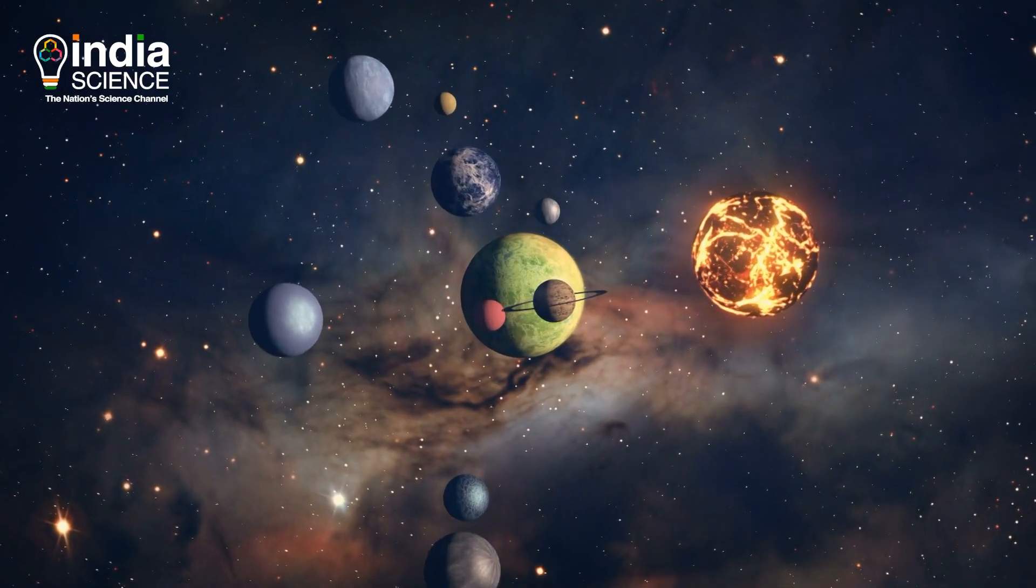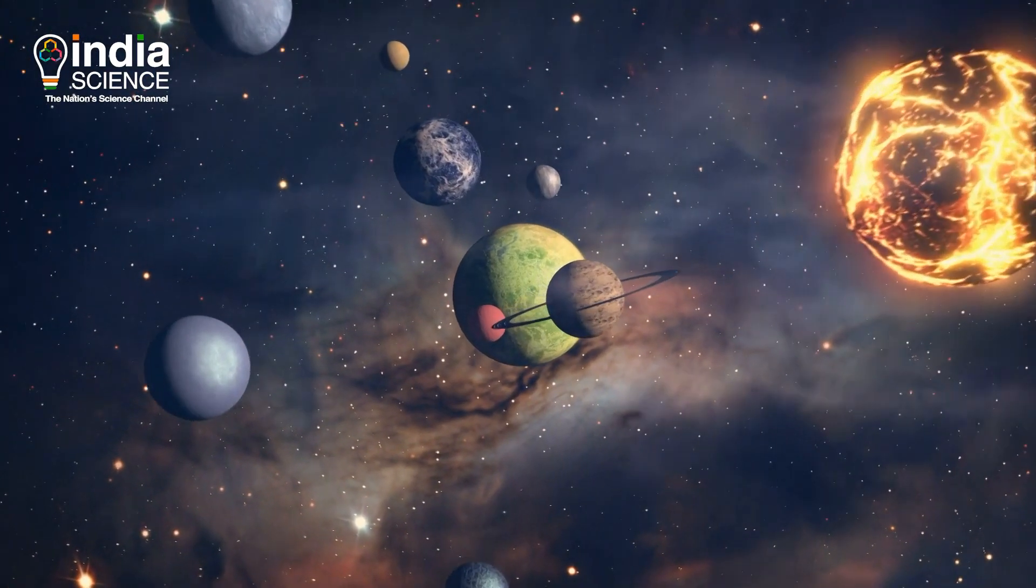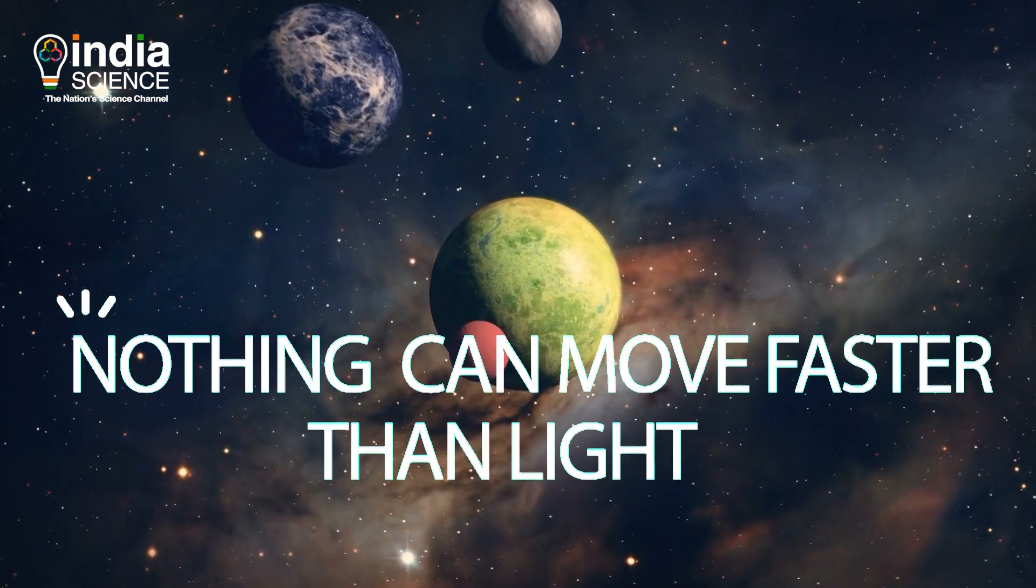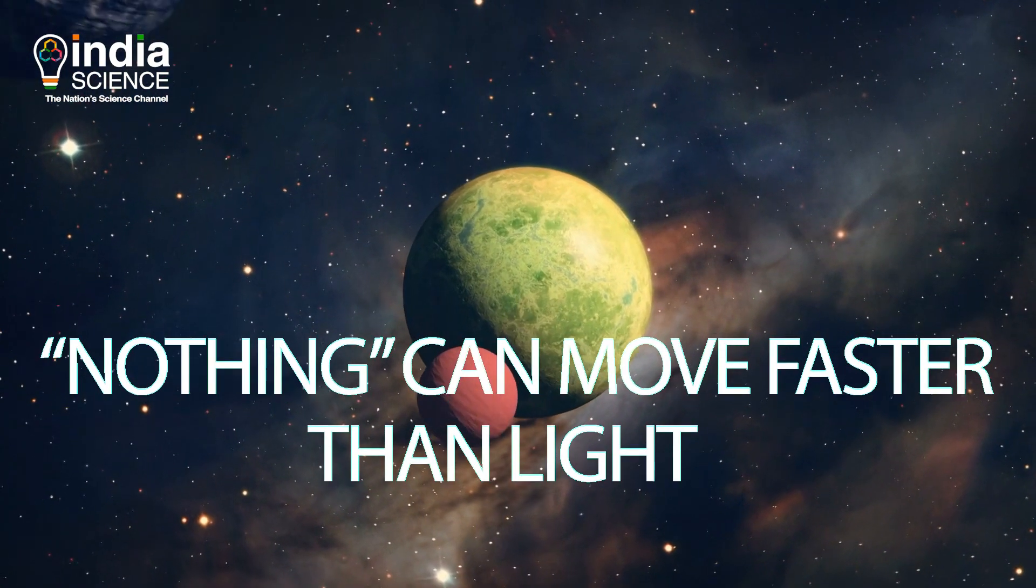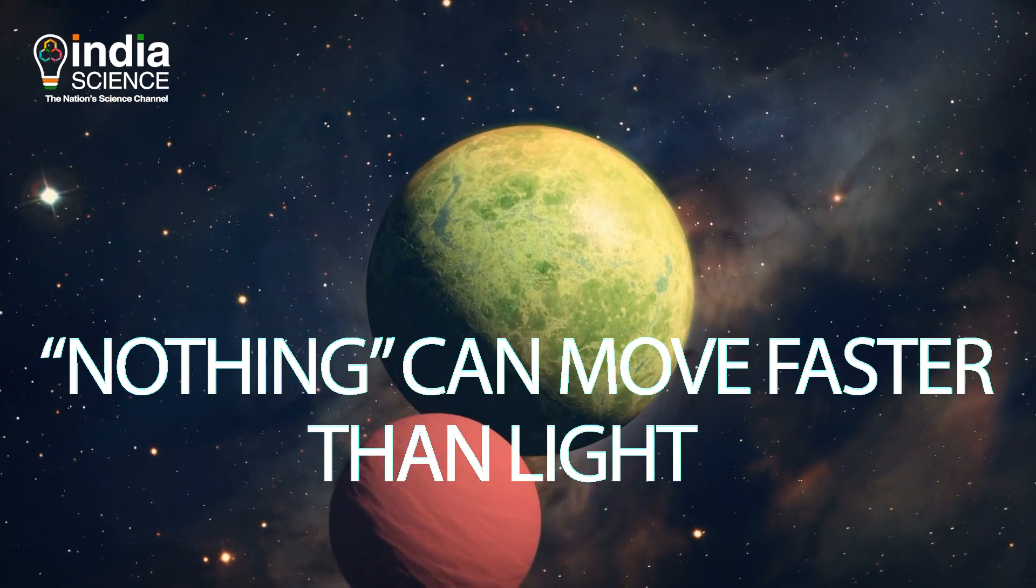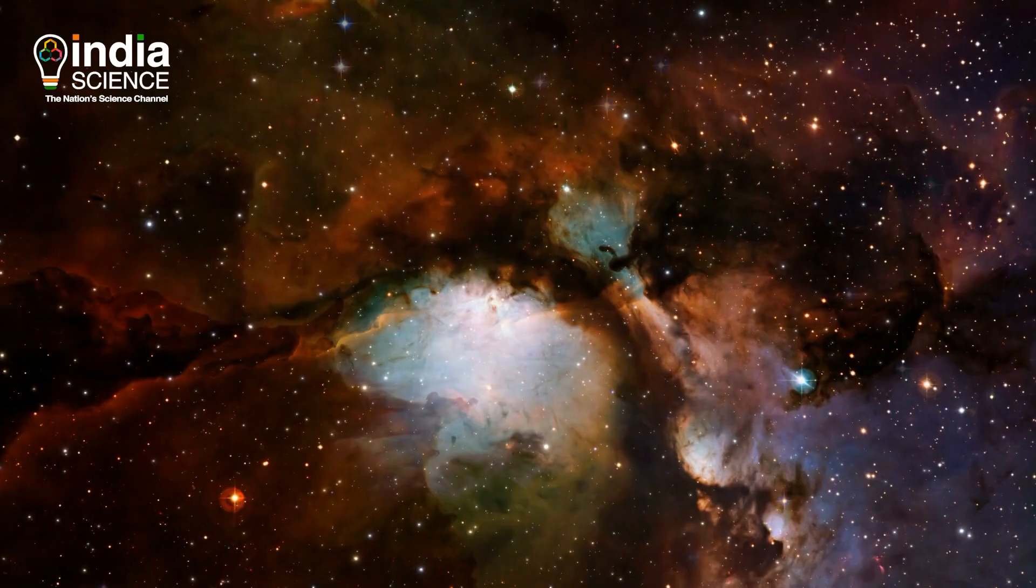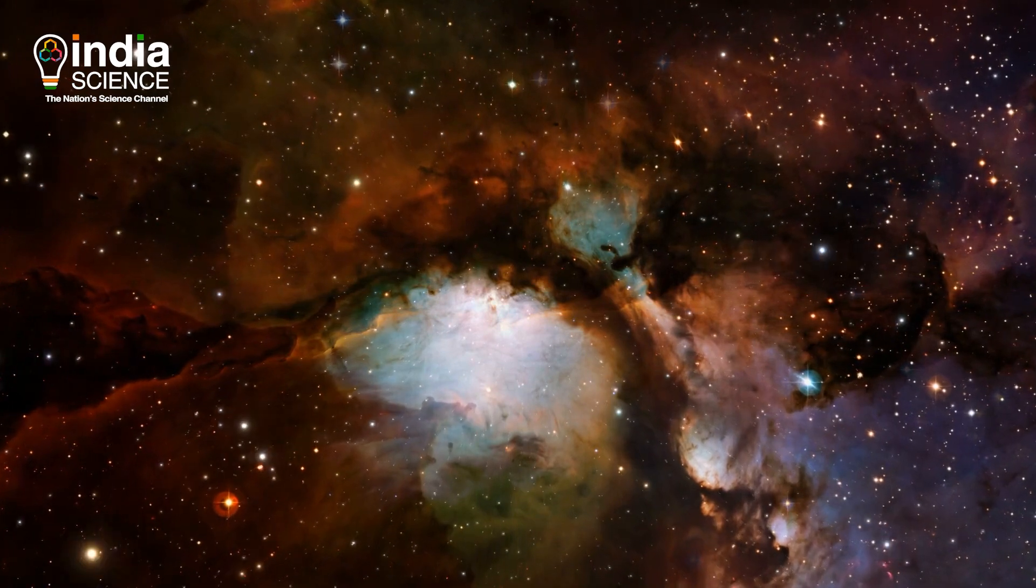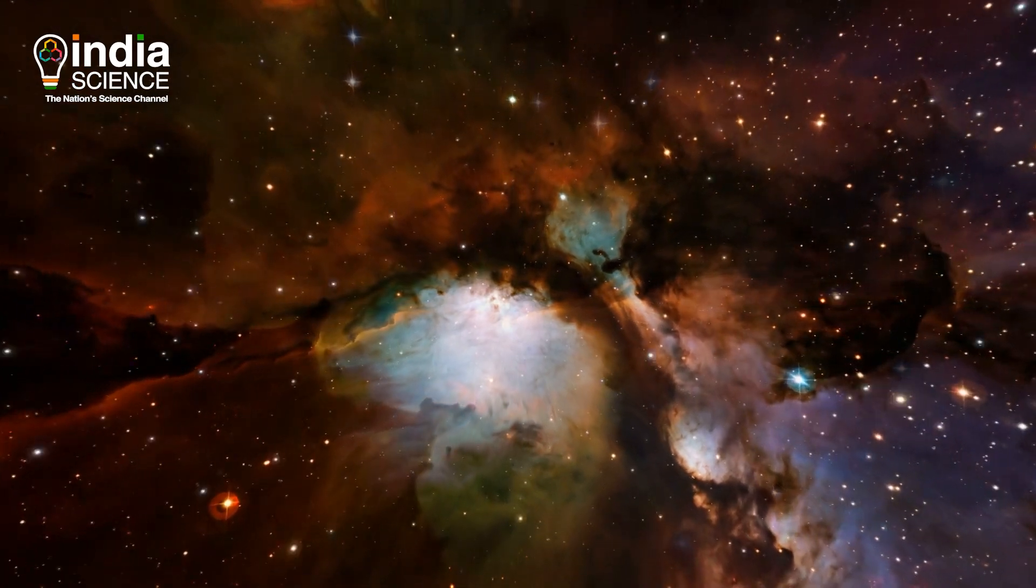And hence, anything with mass cannot move faster than light, which means nothing can move faster than light. I repeat: nothing can move faster than light. Keeping special theory of relativity in mind, can anything without mass, like space or vacuum, travel faster than the speed of light?